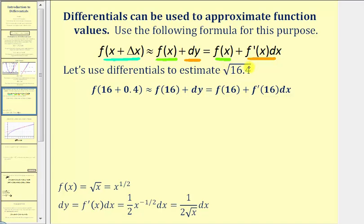Let's use differentials to estimate the square root of 16.4. We let f of x equal the square root of x, which equals x to the one-half. We choose x equals 16 as a convenient nearby perfect square, so differential x equals delta x equals 0.4. Therefore f of 16.4 is approximately equal to f of 16 plus differential y, where differential y equals f prime of 16 times delta x.